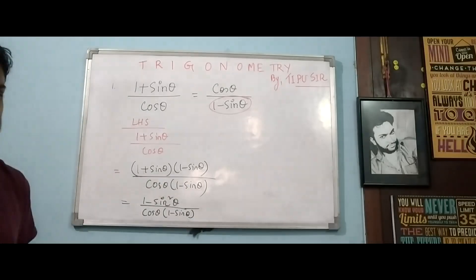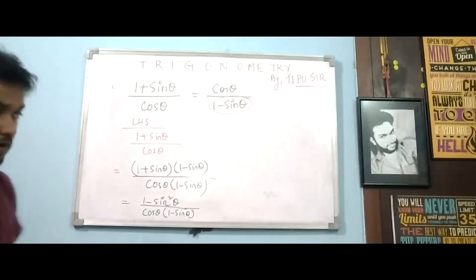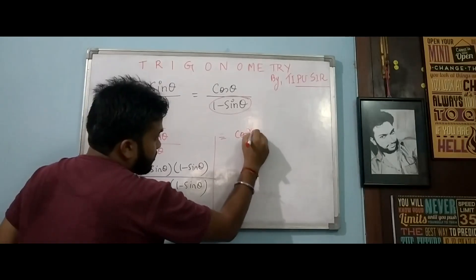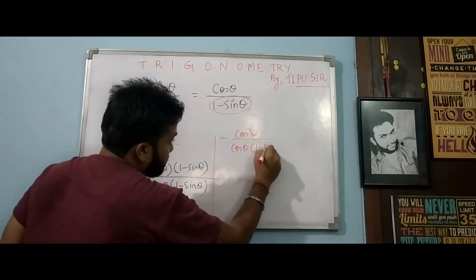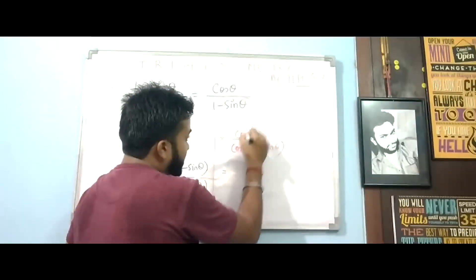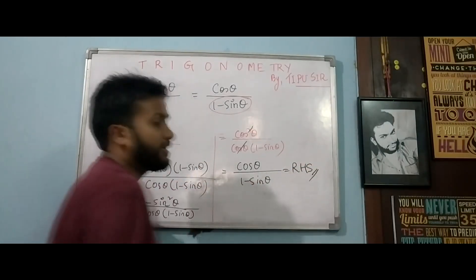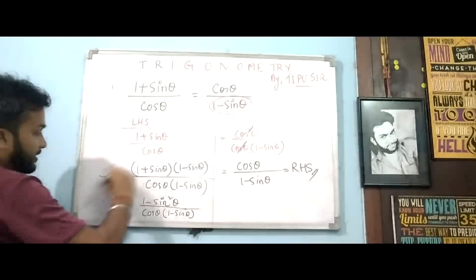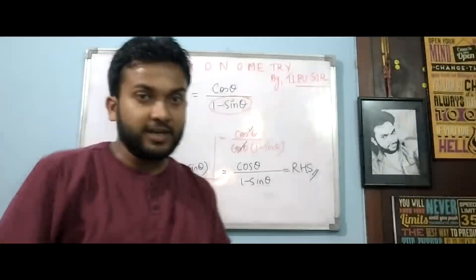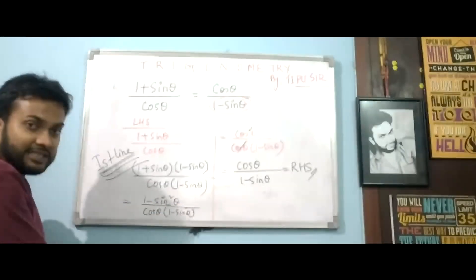The numerator becomes (1 + sin theta)(1 − sin theta) = 1 − sin²θ = cos²θ, using the A plus B times A minus B identity. The denominator becomes cos theta times (1 − sin theta). We then cancel one cos theta, giving us cos theta / (1 − sin theta), which is the right-hand side. The approach in the first step decides the path — if you get that right, the next steps follow automatically.